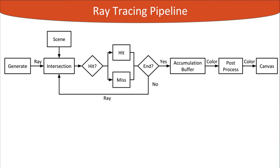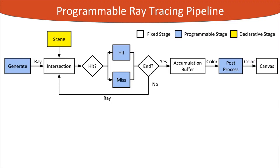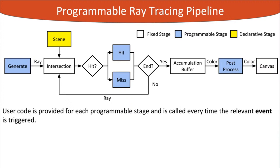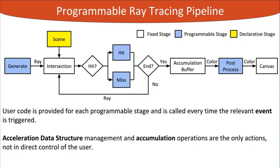To maintain simplicity and accordance with modern graphics APIs, we designed a programmable pipeline with one declarative stage for scene specification and four programmable stages supporting a wide range of ray tracing algorithms. User code is provided for each programmable stage and called when the relevant event is triggered. Since we use WebGL, the programming language is the familiar GLSL. We do not expose the internals of acceleration data structures for simplicity and future-proof design.